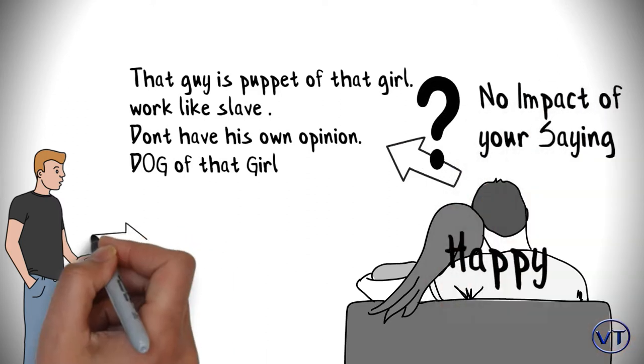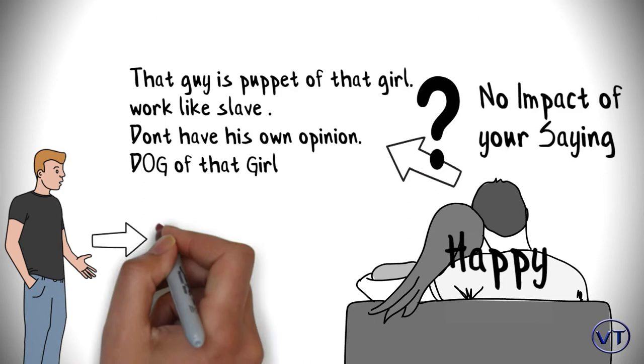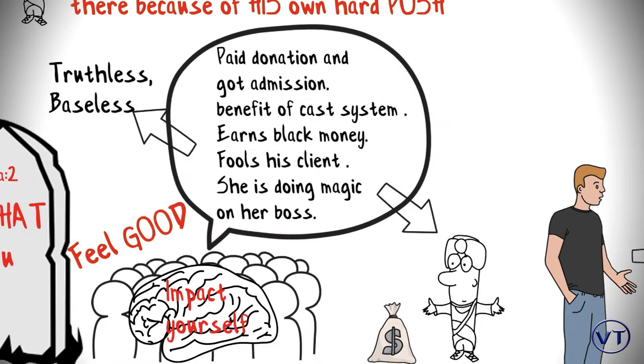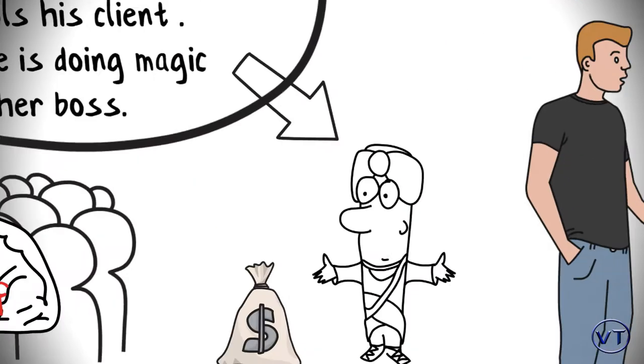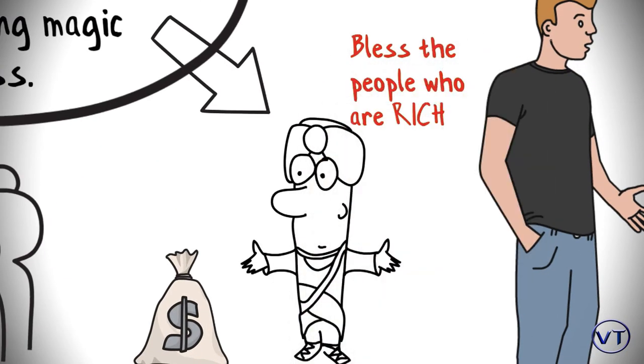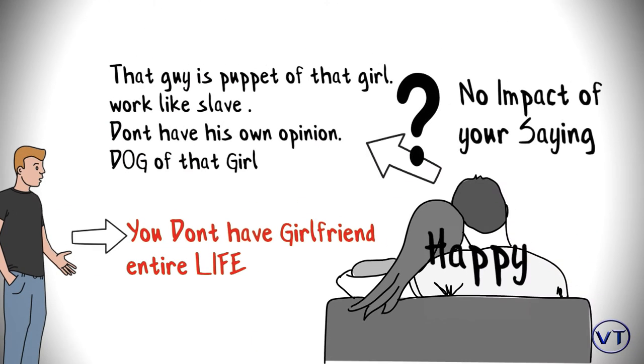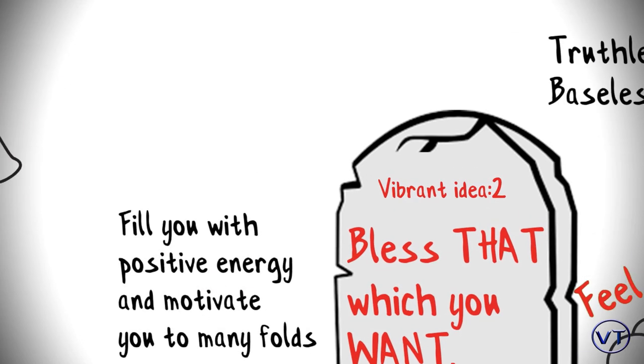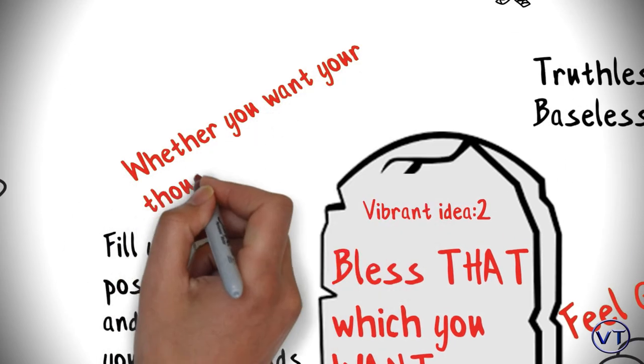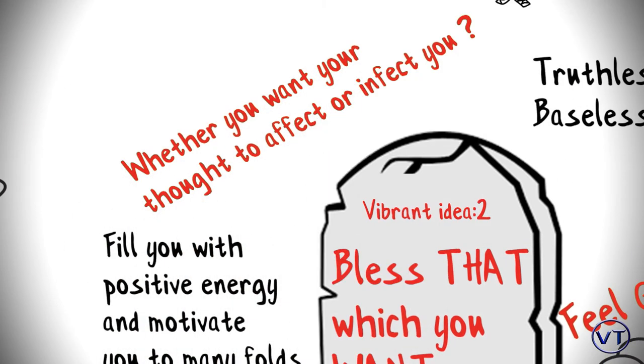But this thinking will definitely deprive you of getting a girlfriend your entire life. Hoona philosophy teaches us that bless that which you want. If you want to be rich, bless the people who are rich. If you want to be smart, bless the people who are smart. It will fill you with positive energy and motivate you to many folds. Now it's time to decide whether you want your thoughts to affect you or infect you.